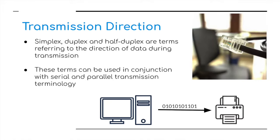Now let's look at transmission directions. There are three different types: simplex, half-duplex, and full-duplex. These terms refer to the direction of data during transmission and can be used in conjunction with serial and parallel transmission terminology. Both parallel and serial can transmit data in both directions.